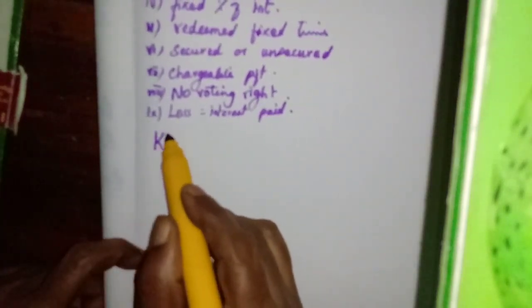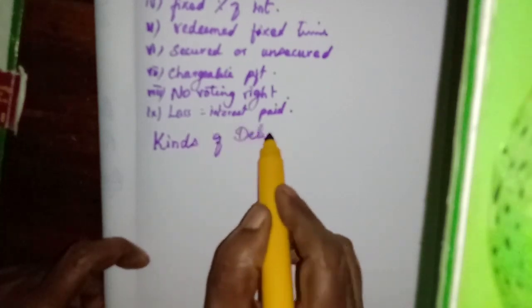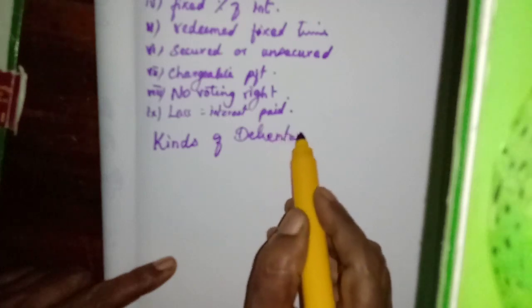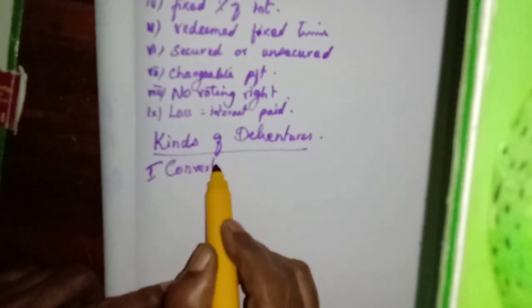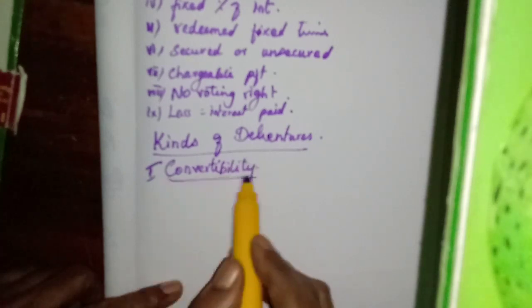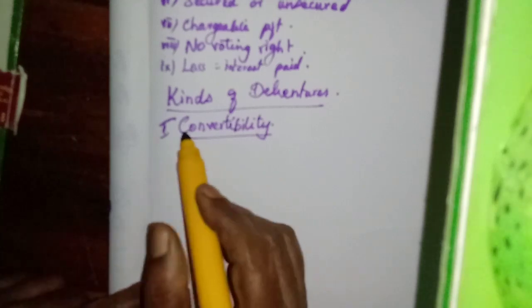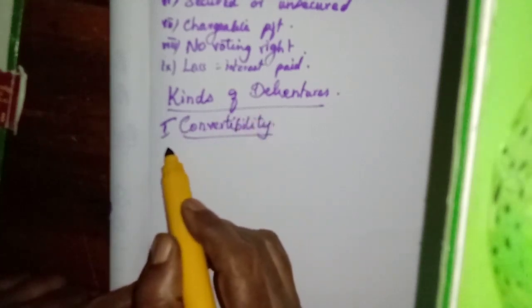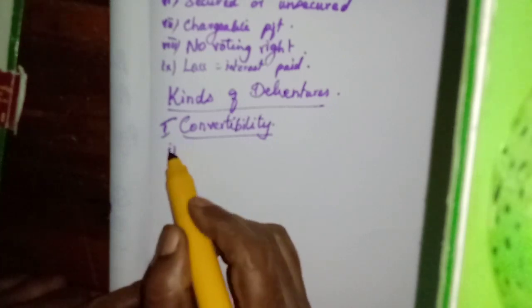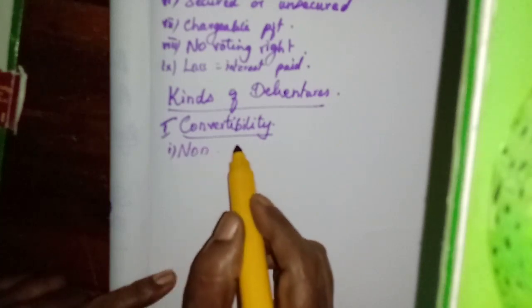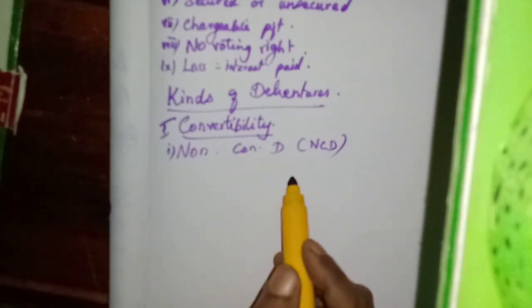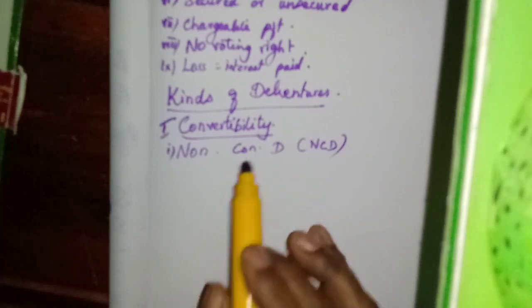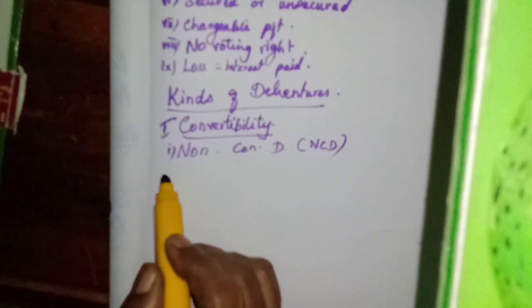Now let us study the kinds of debentures. Debentures can be classified under various bases. The first basis is on the basis of convertibility — whether they can be converted into shares. On this basis, debentures are classified into four categories. The first one is non-convertible debentures — these debentures cannot be converted into equity shares. They remain debentures forever.